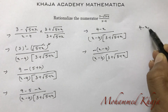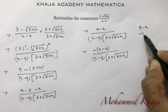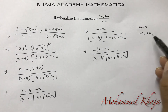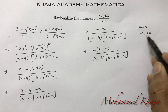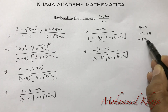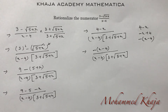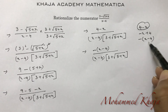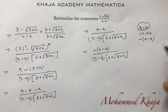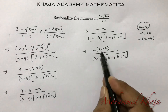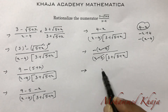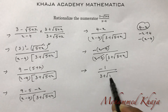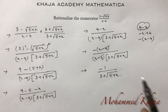Here's the explanation: 4 minus x can be written as minus x plus 4, and if we take minus common from both terms, we get minus(x minus 4). So 4 minus x equals minus(x minus 4). Now x minus 4 in the numerator and x minus 4 in the denominator cancel, leaving minus 1 over 3 plus root(5+x).